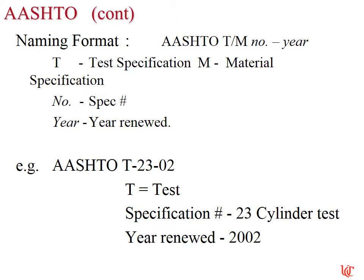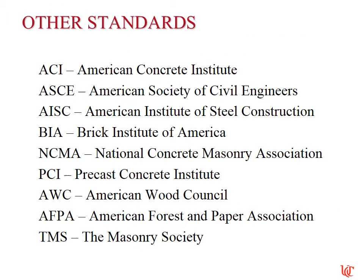In AASHTO's format, after the M or T letter, there is a specification number followed by a year — either the most recent year renewed or the year it was first established. There are also many other standard organizations in the United States, and as civil, construction management, and architectural engineers you'll get used to these organizations, each writing specifications relevant to their particular niche — everything from masonry to wood to brick to steel.